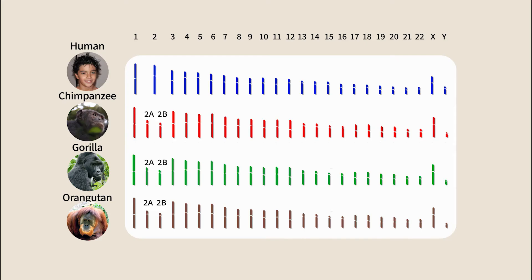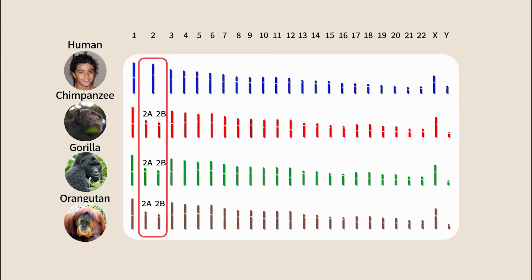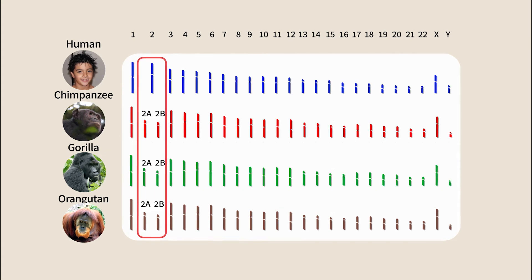Apes, gorillas, orangutans and chimpanzees all have 24 chromosome pairs. Humans, in contrast, have only 23. Here too, it is evident that the difference was caused by chromosome fusion or breakage.